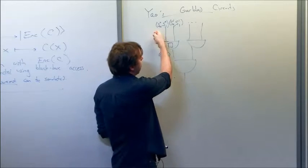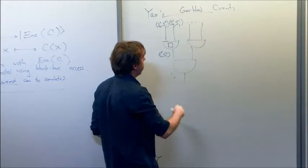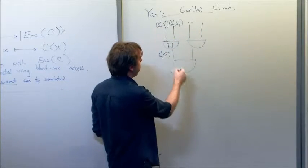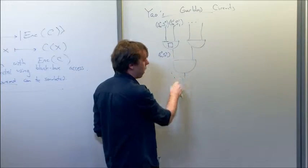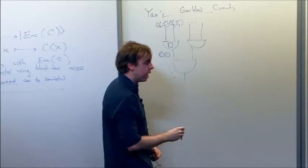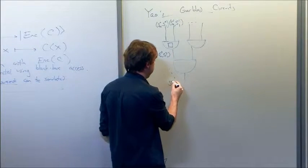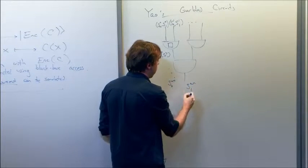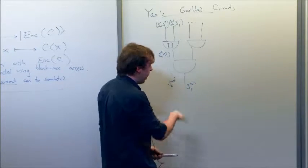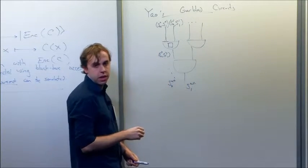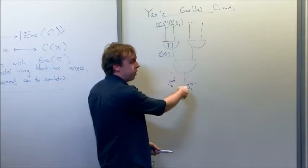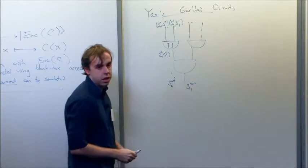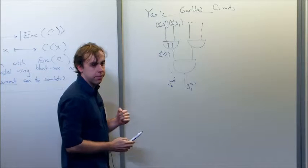Once you have one secret for each of the input wires, you can recursively compute the secret for every wire, including the secret for the output wire. You ultimately obtain exactly one of the two output secrets. Then I also provide some data which allows you to distinguish between those two secrets, which corresponds to learning the output of the circuit.